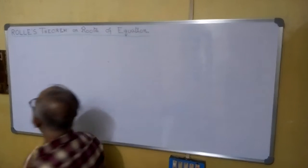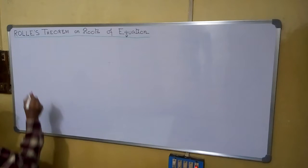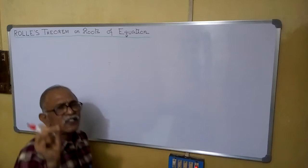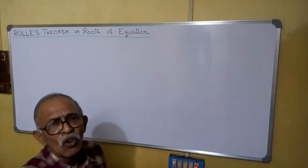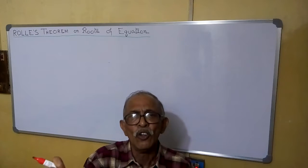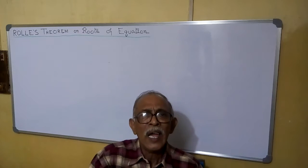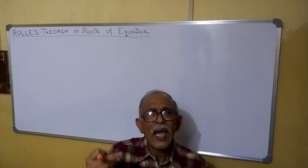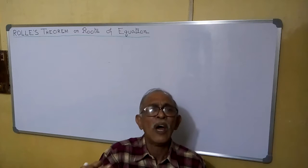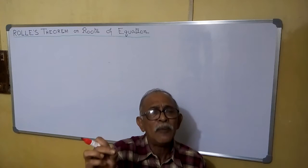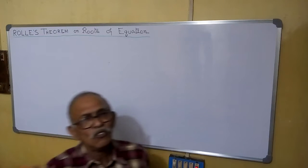Welcome. What is Rolle's theorem on roots of equation? It says that in between two consecutive real roots of f(x) = 0, there will be at least one or an odd number of roots of f'(x) = 0.